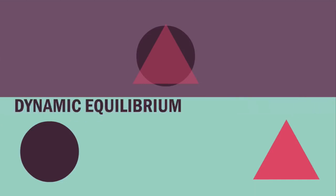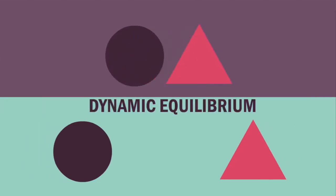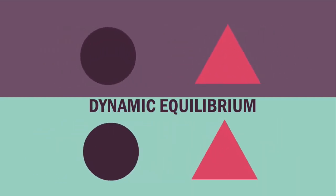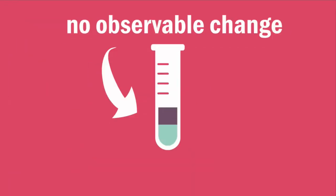This is called a dynamic equilibrium because both processes are occurring simultaneously, even though there is no overall observable change.